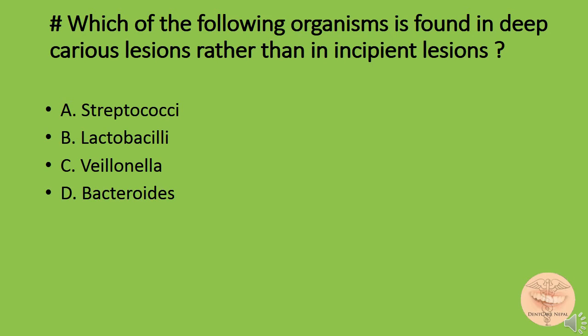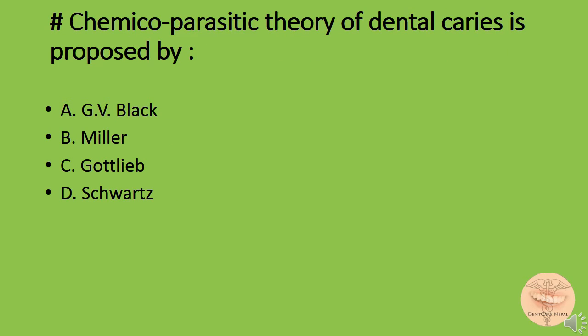Which of the following organisms is found in deep caries lesions rather than incipient lesions? Option A) streptococci, option B) lactobacilli, option C) Veillonella, or option D) bacteroids. The correct answer is option B: lactobacilli. Chemical parasitic theory of dental caries was proposed by: option A) G.V. Black, option B) Miller, option C) Gotley, or option D) Schwarz.